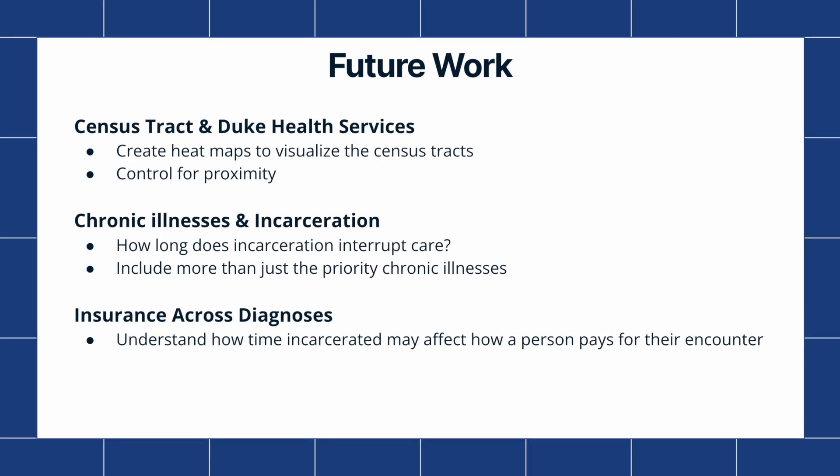For future work, focusing on census tract and Duke Health services, we want to create heat maps to visualize the census tracts and focus on other variables including health insurance and race. We also want to control for proximity, since there are multiple hospitals in the area which can affect ED visits. For chronic illnesses and incarceration, we want to question how incarceration interrupts care and include more than just the priority chronic illnesses. For insurance across diagnoses, we want to understand how time incarcerated may affect how a person pays for their encounter.